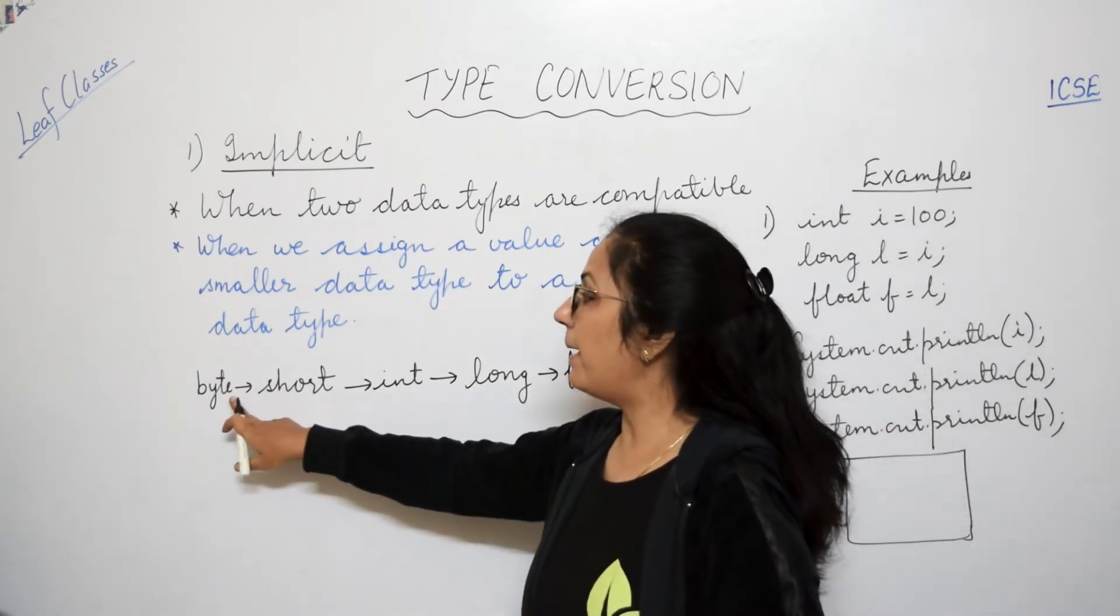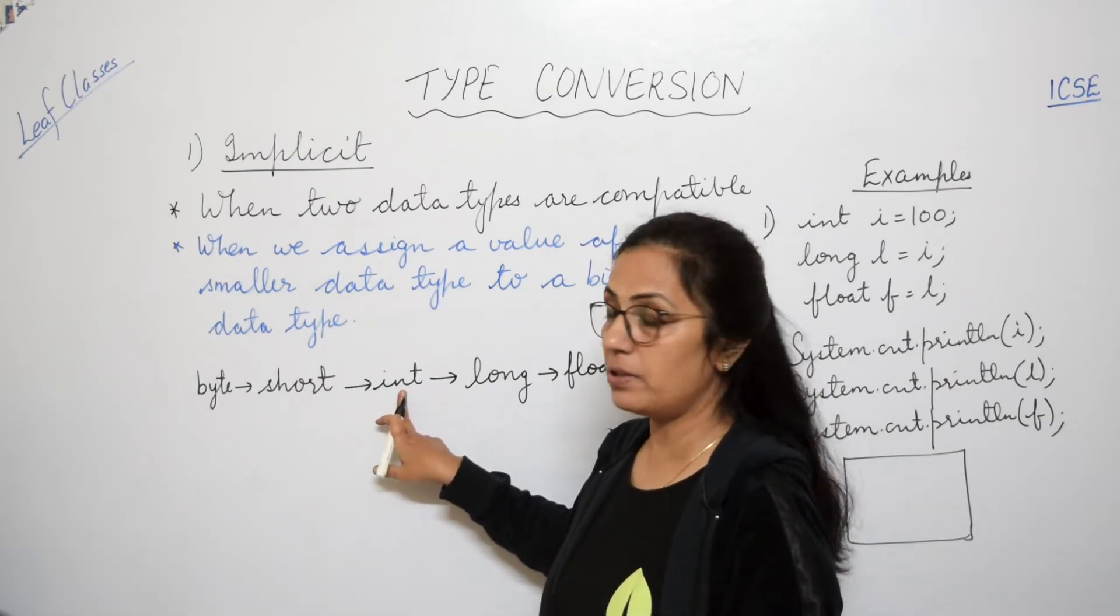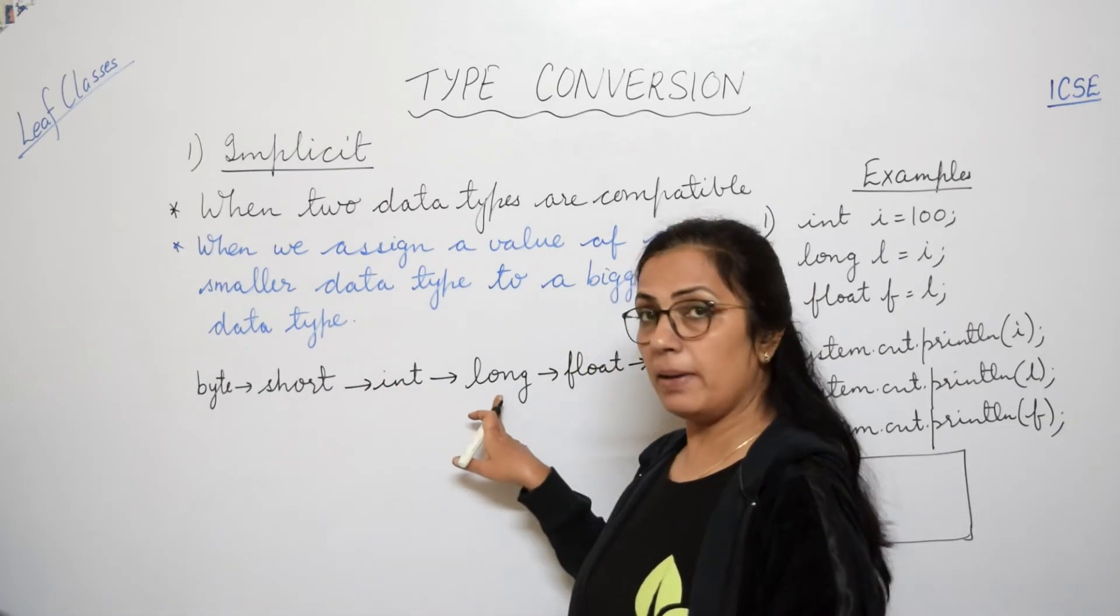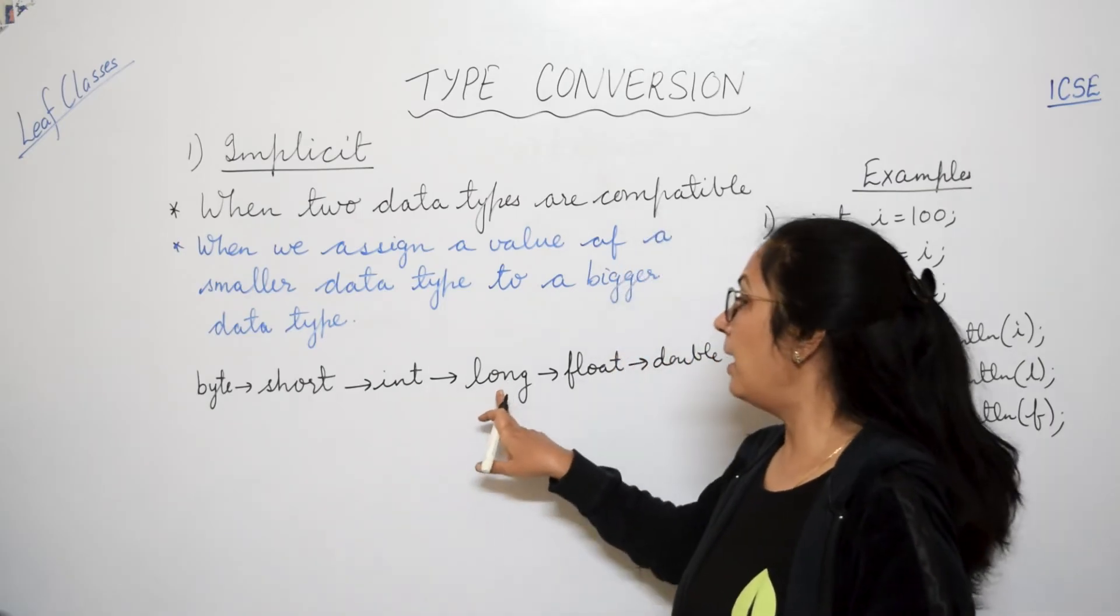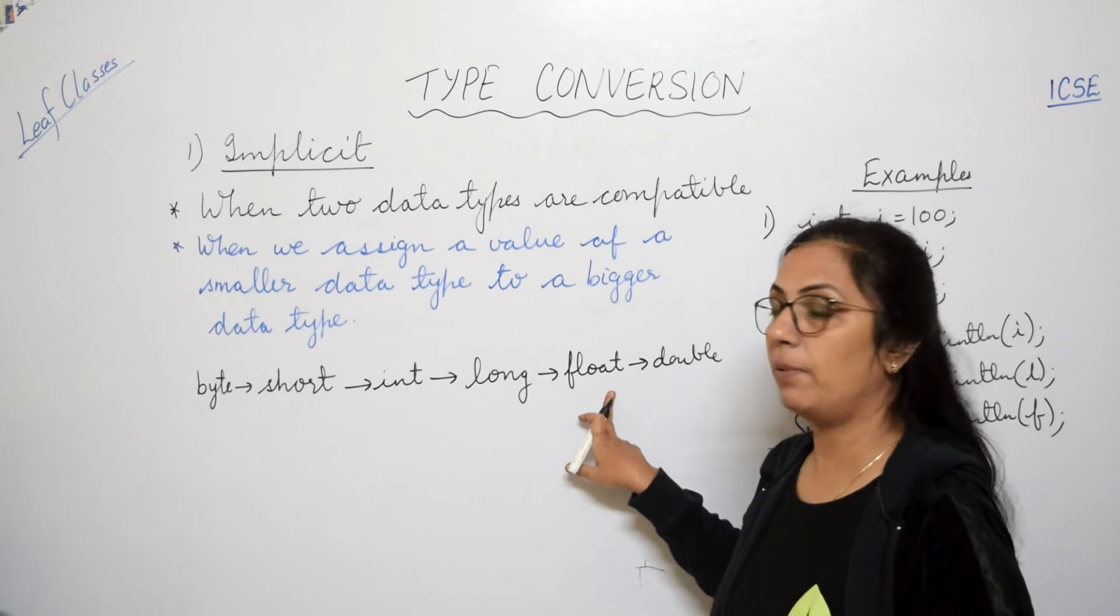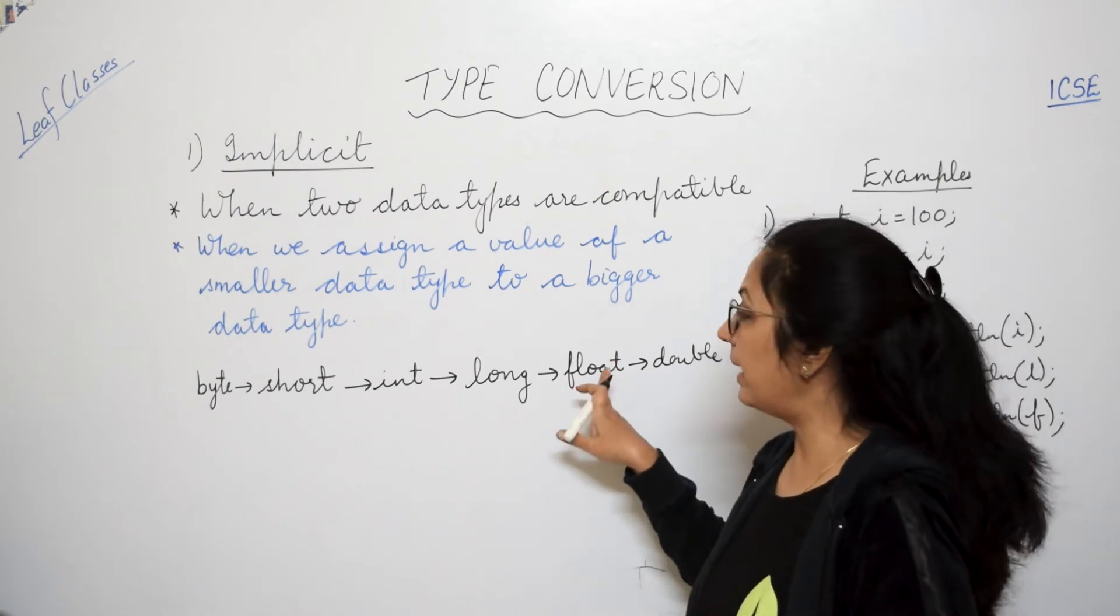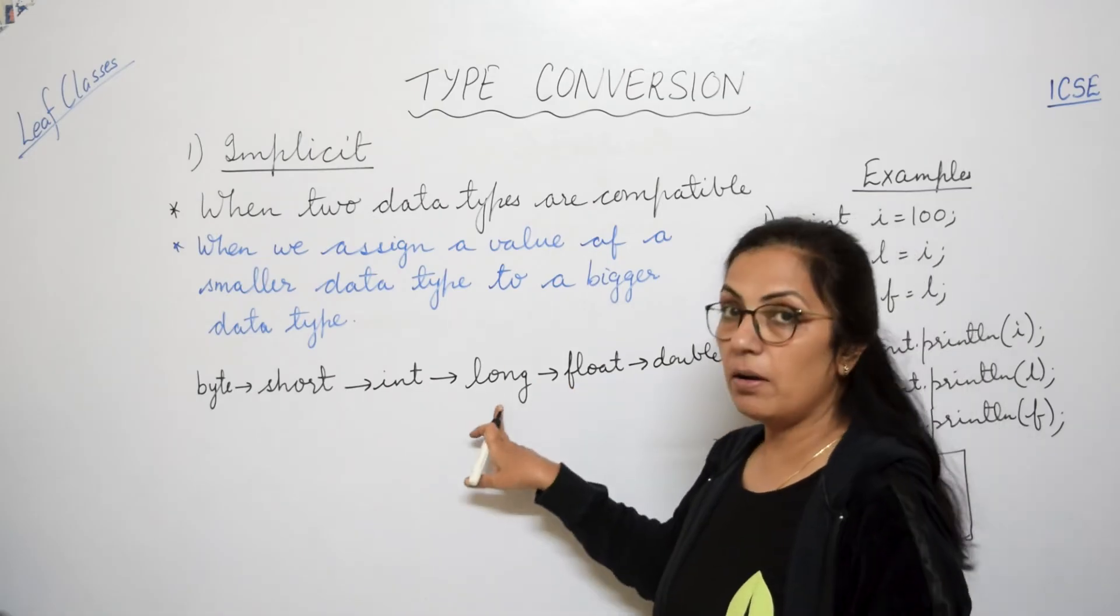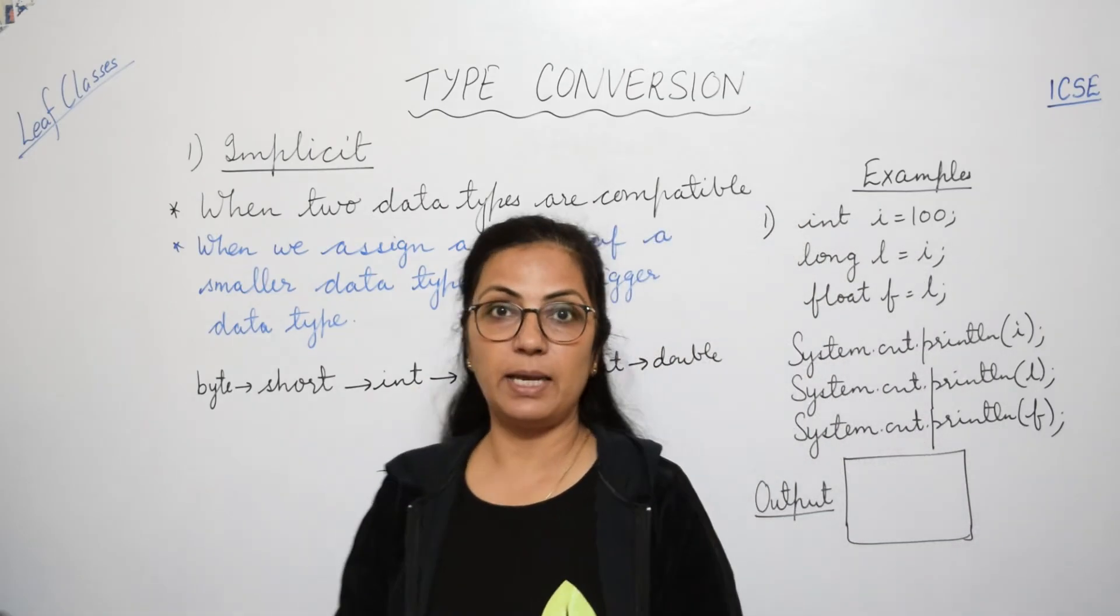Yaani ki agar hum byte ko int mein store karte hain, automatic conversion possible hai. Short ko long mein karte hain, possible hai. Int ko long mein karte hain, possible hai. Long ko float mein karte hain, possible hai. But agar hum double ko float mein karenge toh possible nahin hai. Float ko long mein karenge toh possible nahin hai. Long ko int mein karenge, possible nahin hai.